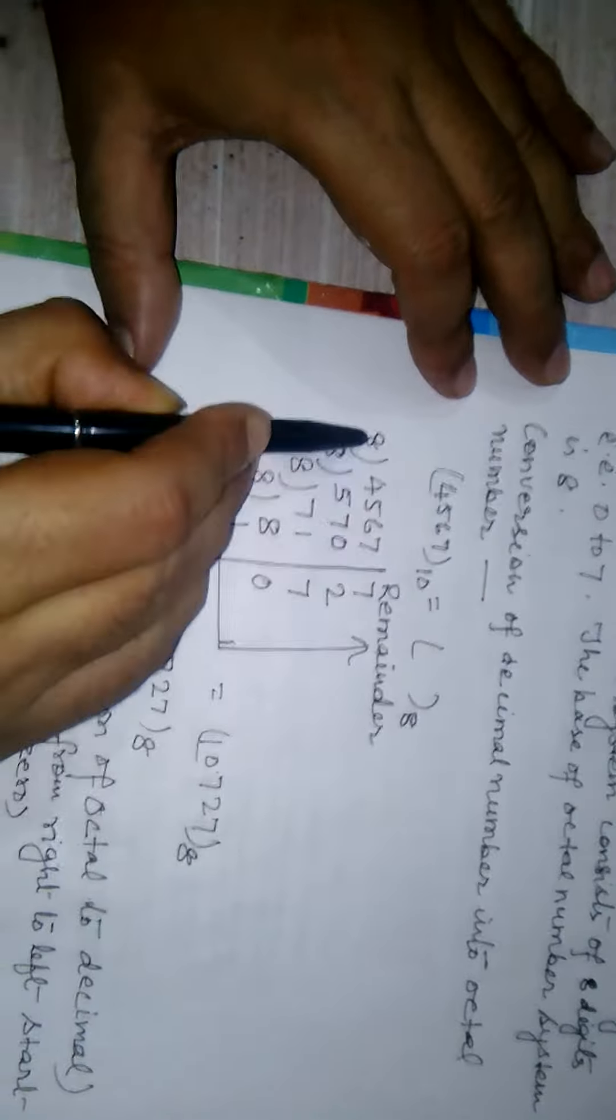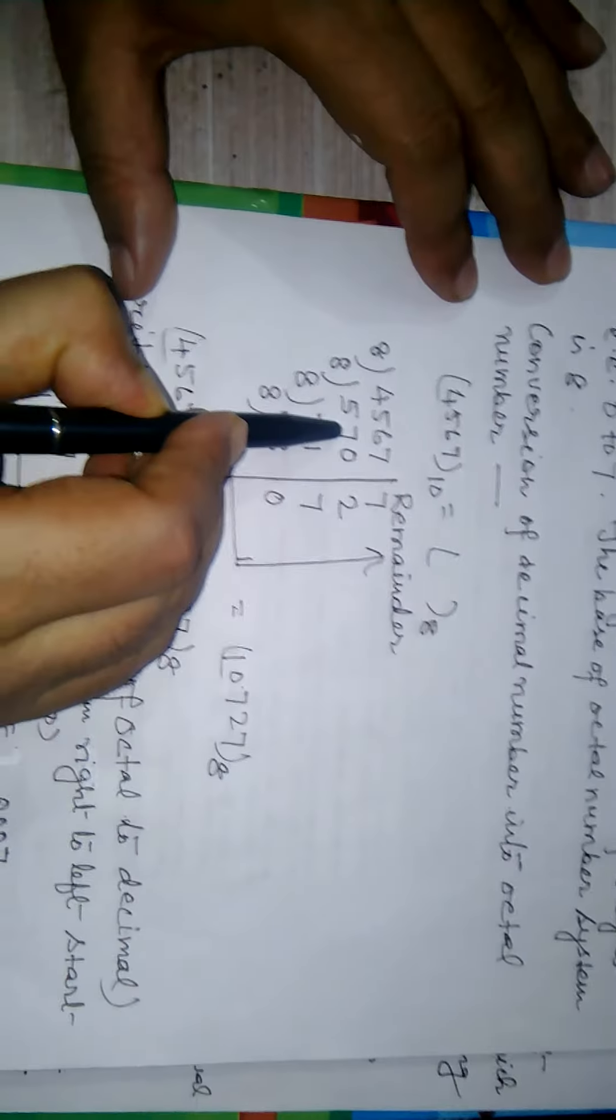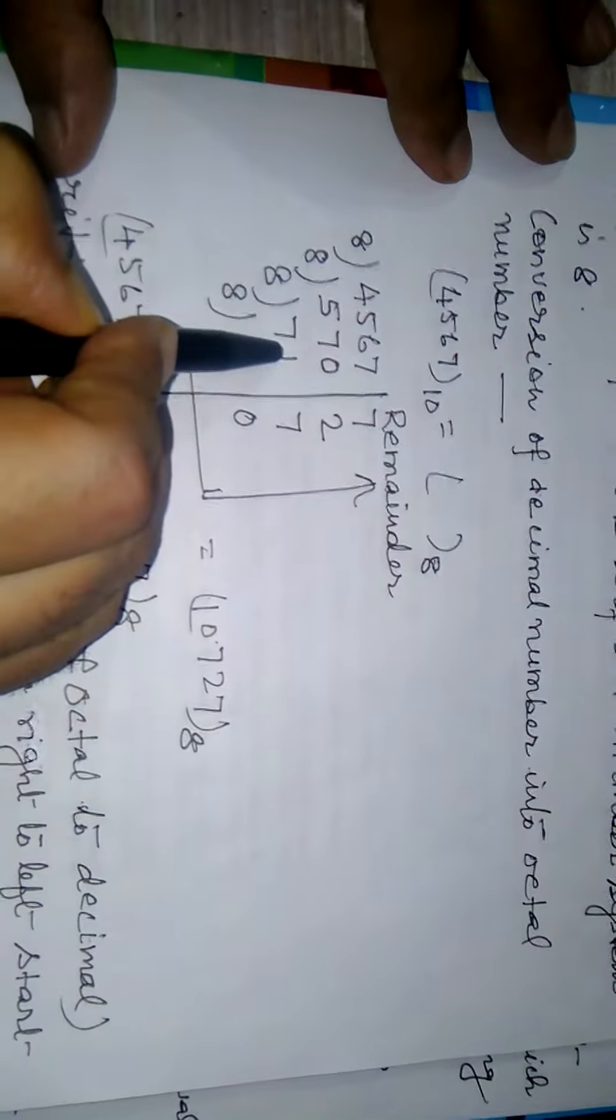4567 divided by 8, 570 is the quotient and remainder is 7. Now, again divide by 8, 71 is the quotient and remainder is 2.